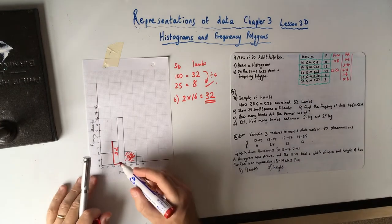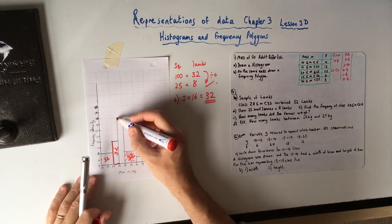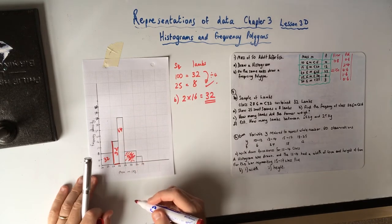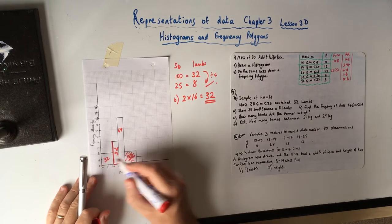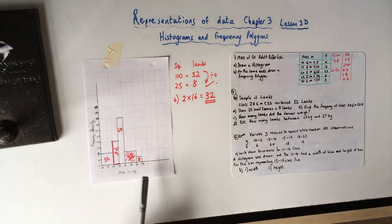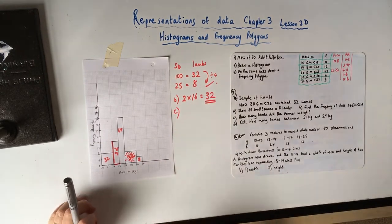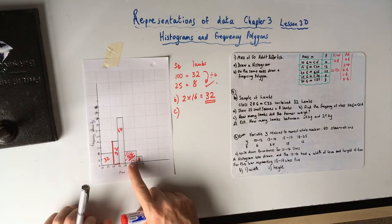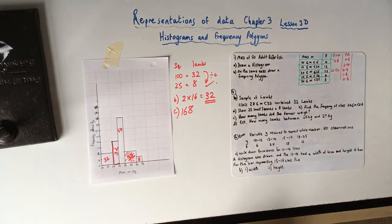To find the total number of lambs I work out the area of every bar. One bar is 2 wide and 32 tall = 64, another is 2 wide and 32 tall = 64, one is 2 wide and 4 tall = 8. Adding them all up: 64 + 64 = 128, then 130, 160, 168. So the farmer weighed 168 lambs in total.